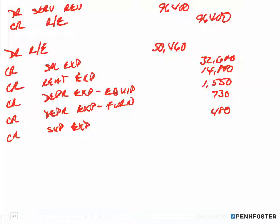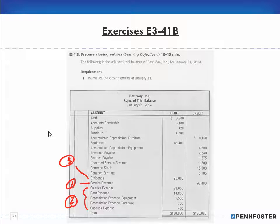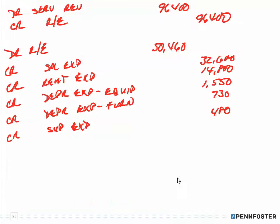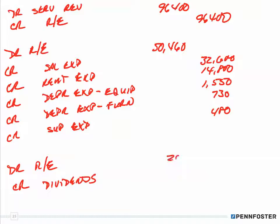The last closing entry is for dividends of 20,000. Dividends has a debit balance, so we credit dividends 20,000 and debit retained earnings 20,000. Those are all our closing entries for this problem.